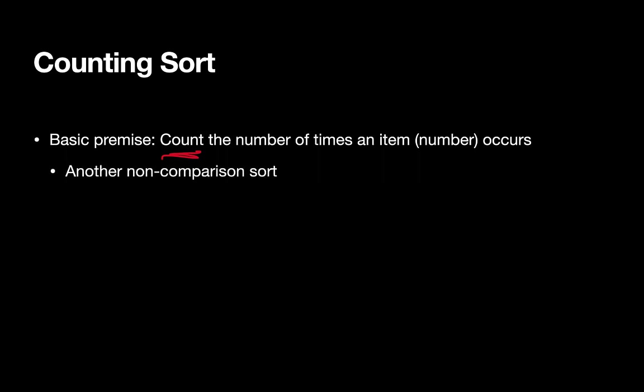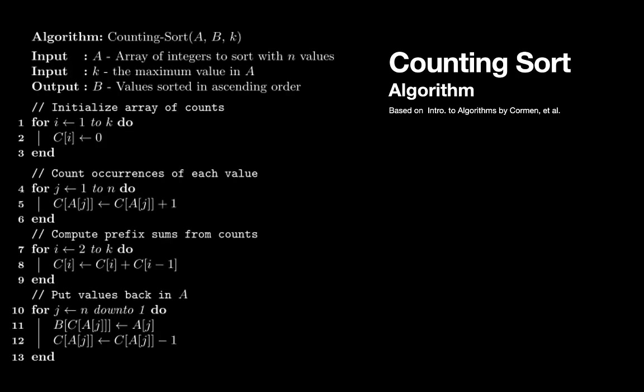So this is another non-comparison based sort. It's an alternative to the stable sort we used previously. The example we'll look at is specifically going to be used to sort positive numbers within a certain range.